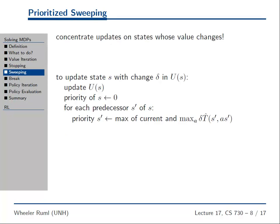Frank was unhappy because we were updating every single state in each iteration and we were going to have to do an infinite number of iterations. Infinity times every single state in the whole universe is a big number. So people have invented a whole bunch of algorithms to not do all that work all the time. The first one we'll talk about today is called Prioritized Sweeping.